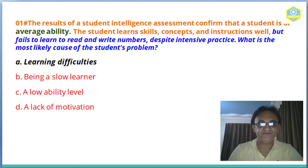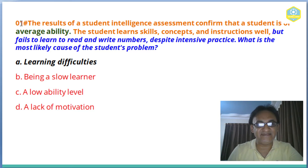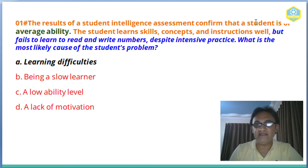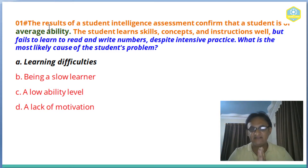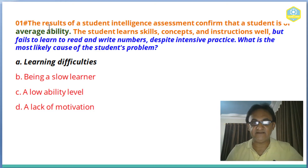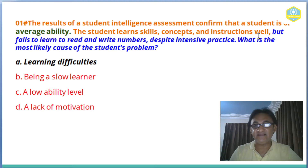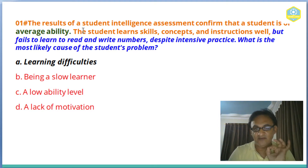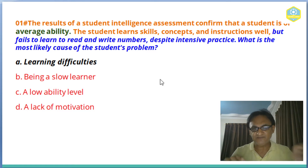Question number one is about learning disabilities or difficulties. You can see on the screen: the results of a student's intelligence assessment confirmed that the student is of average ability. The student learns skills, concepts, and instructions well, but fails to learn to read and write.